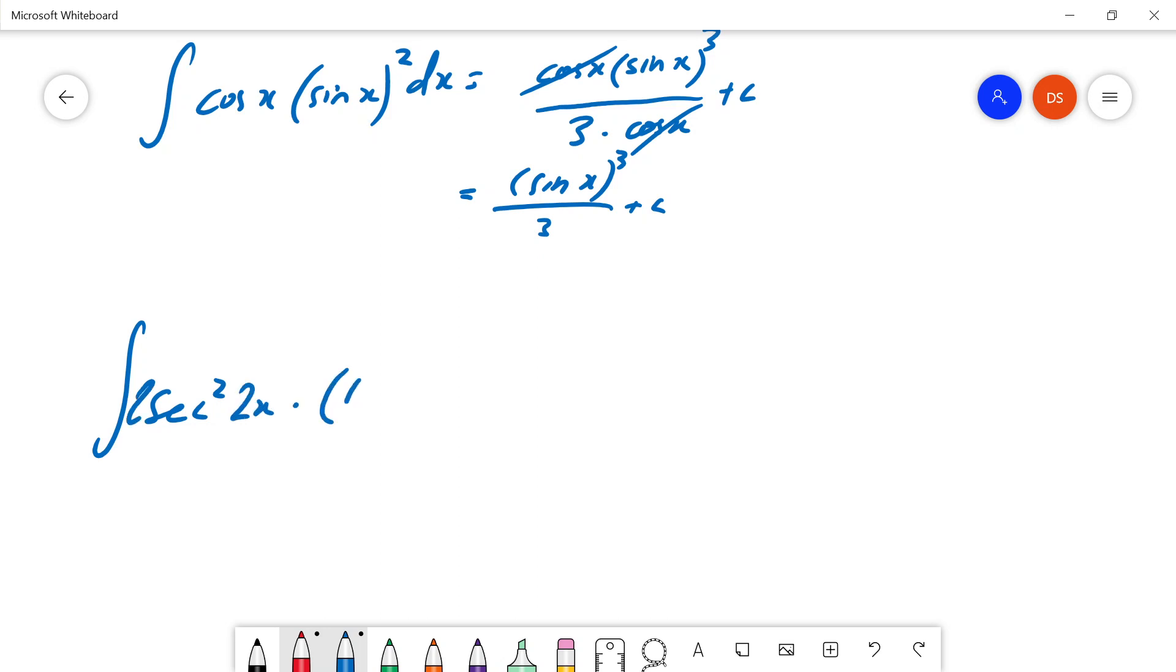times tan 2x to the power of 5. Well, the derivative of tan 2x is 2 sec squared 2x so I can just write 2 sec squared 2x times tan to the power of 6 over 6 divided by 2 sec squared 2x that cancels that cancels plus C.